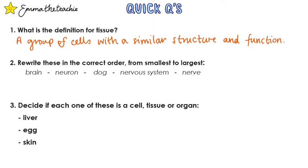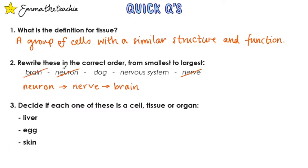Question two: rewrite these in the correct order from smallest to largest. We start off with the cell, which is the neuron; then the tissue, which is the nerve; then the organ, which here is the brain; then the organ system, which is the nervous system — that word's a bit of a giveaway! And finally, the whole organism is the dog.